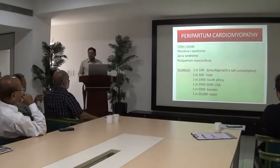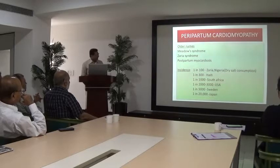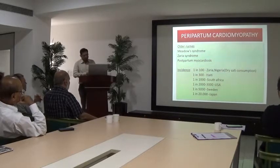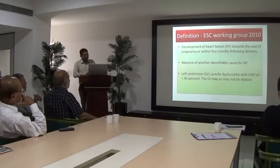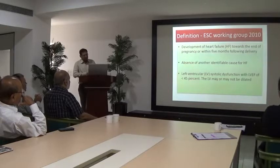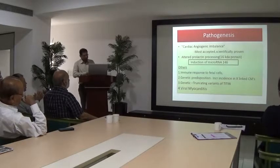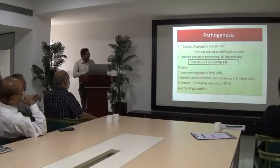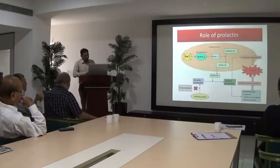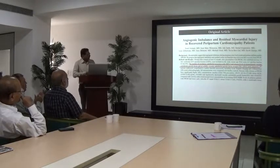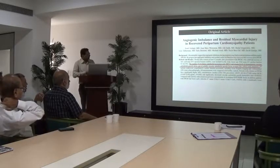Next is peripartum cardiomyopathy, also called Meadows syndrome, Zaria syndrome, or postpartum myocarditis. Incidence is higher in African countries and increasing in recent years. It is defined as development of heart failure towards the end of pregnancy or within 5 months postpartum, with absence of identifiable prior cause for heart failure and ejection fraction less than 45%. Maximum risk is from 37 to 40 weeks onwards. Pathophysiological theories include angiogenic imbalance and altered prolactin processing. Other theories include immune response to fetal cells, genetic predisposition, variants of titin, and viral myocarditis. The angiogenic theory suggests increased circulating endothelial cells causing the condition.